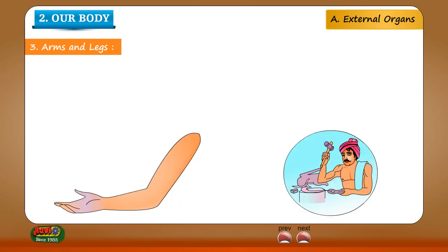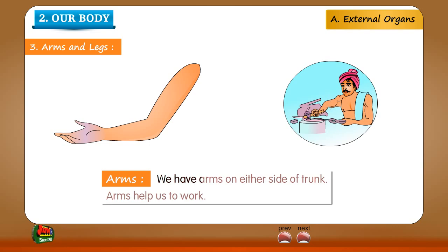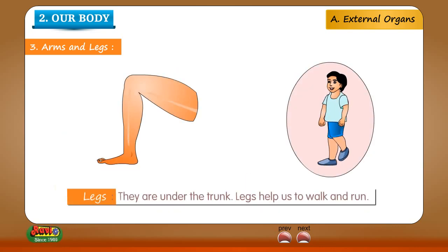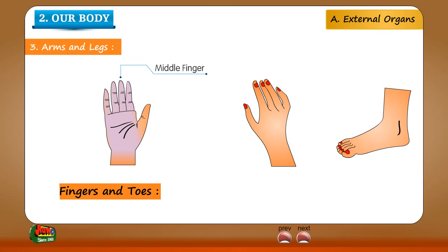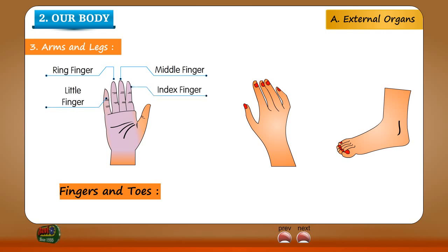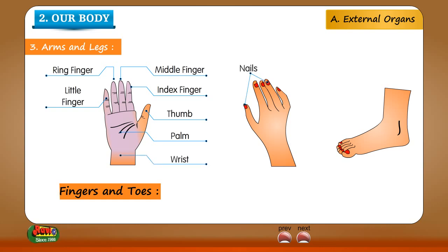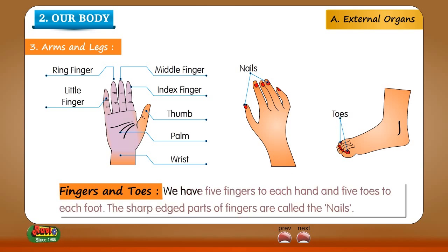Arms and legs: We have arms on either side of the trunk. Arms help us to work. Legs are under the trunk and help us to walk and run. Fingers and toes: we have five fingers to each hand and five toes to each foot. The sharp edged parts of fingers are called the nails.